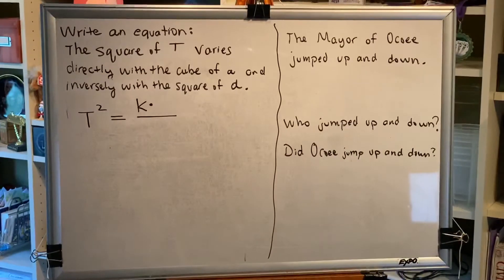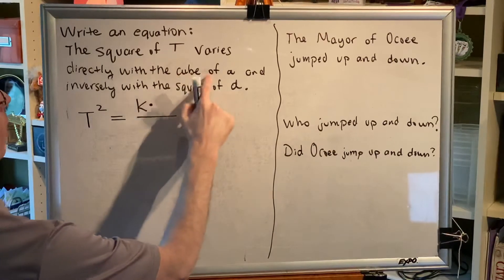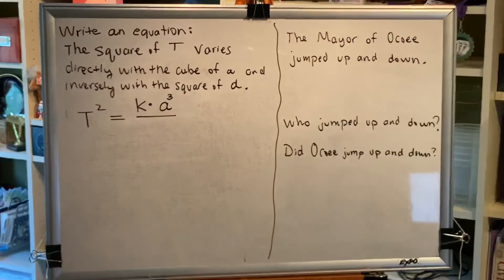Step three. Write the other quantities or expressions in the fraction. If the word directly is used, as it is here, then that quantity goes in the numerator. So, the cube of a, a cubed, goes in the numerator.